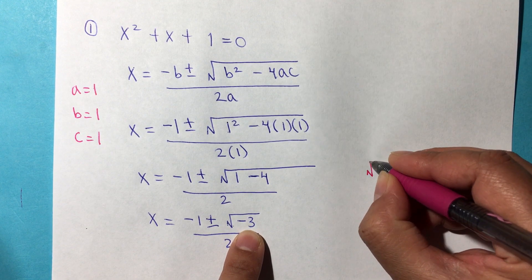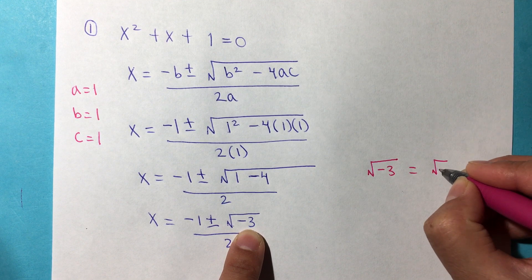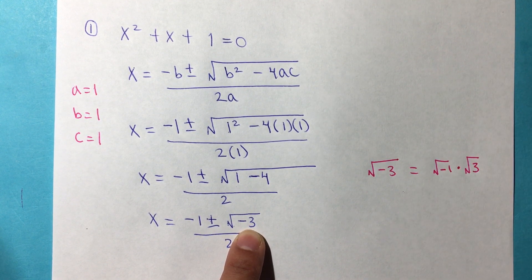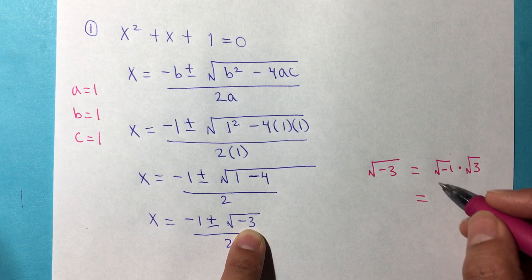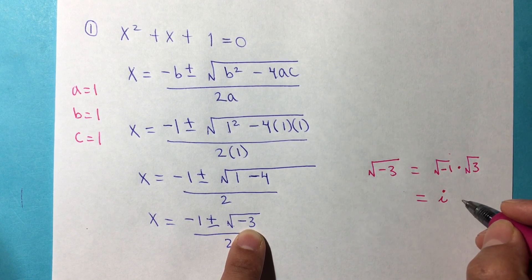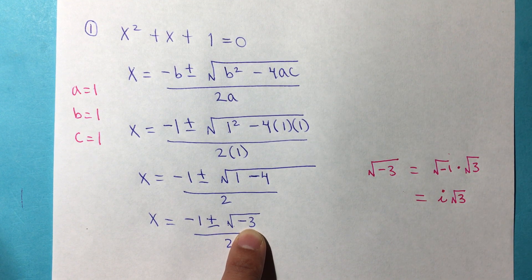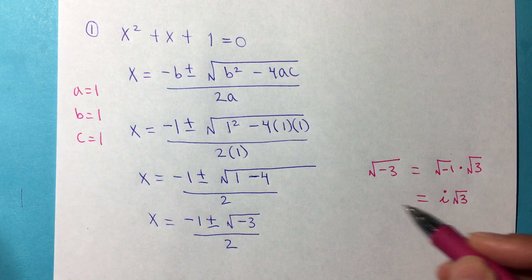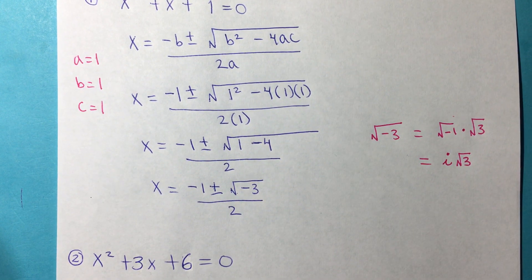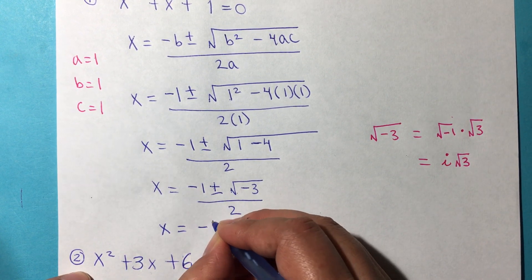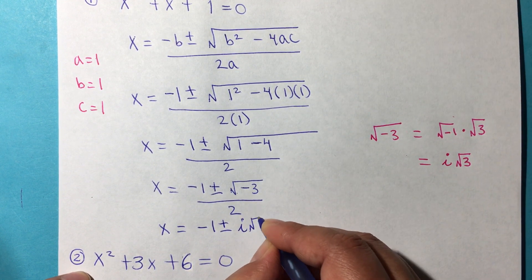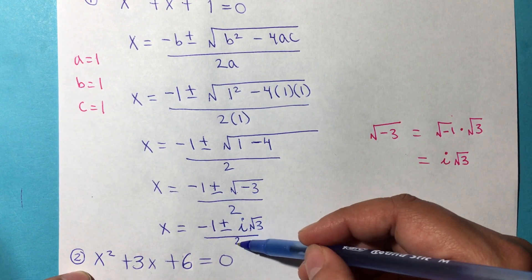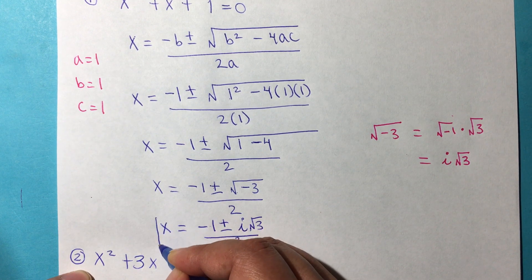We learned that the square root of negative 3 is the same as the square root of negative 1 times the square root of positive 3. We're just separating the negative. And we also learned that any time we have negative 1, that becomes the imaginary number. And we just keep it as square root of 3 because square root of 3 doesn't have a simplified rational number. So our answer is going to be x is equal to negative 1 plus or minus — instead of square root of negative 3, it's going to be i times square root of 3 — divided by 2. There's nothing we can simplify here, so that's it for the answer.